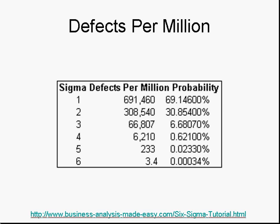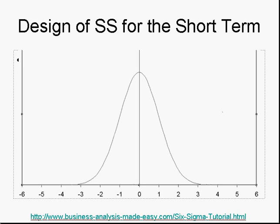But if you were to go to normal probability tables and make the calculation, you would discover that the numbers are way different. That is because there is a big safety factor that is built into the Six Sigma methodology.